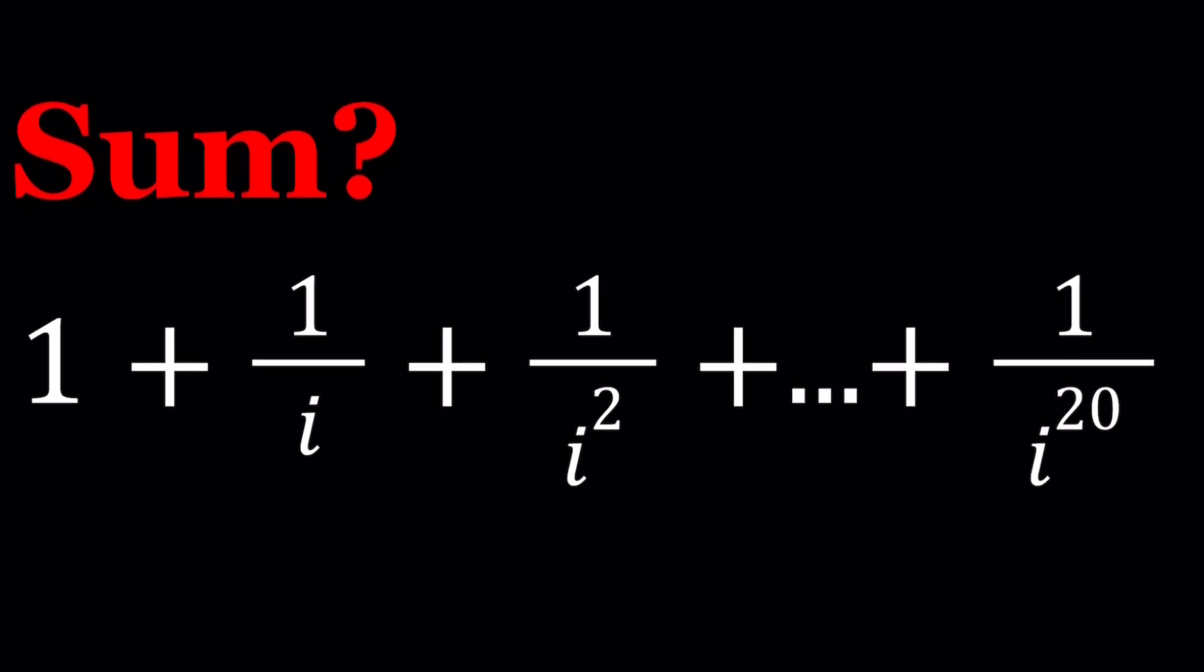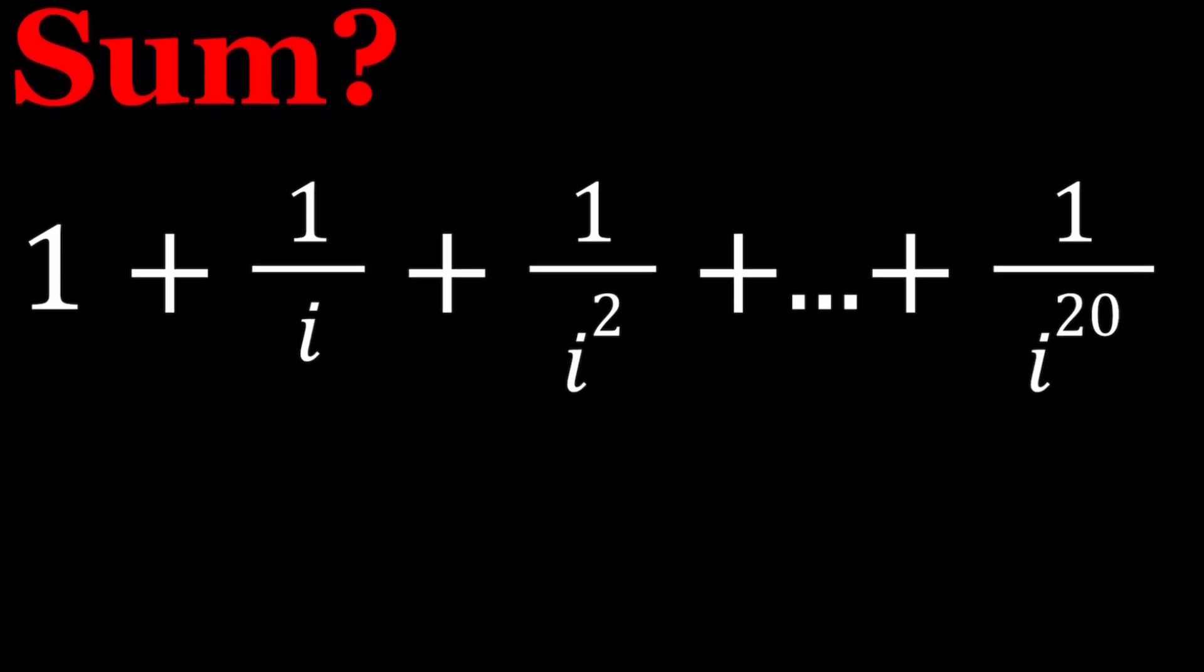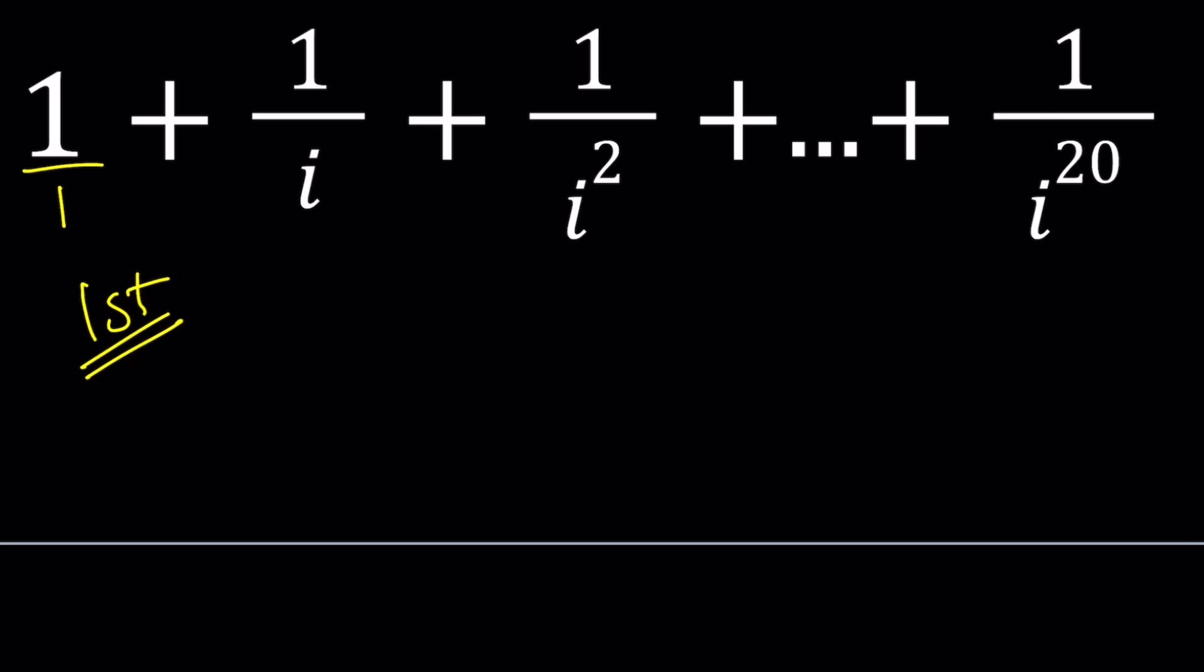Anyways so to be able to find the sum I'm going to be presenting more than one method and the first method looks as follows. I'm going to actually make for my first method I'm going to make a common denominator because why not? Okay the common denominator would be i to the power 20 so if I start with 1 over 1 I'm supposed to multiply this by i to the power 20 and the next one by i to the 19th and then i to the 18th all the way down to 1 and all of that is divided by i to the power 20.